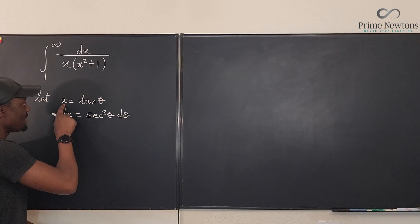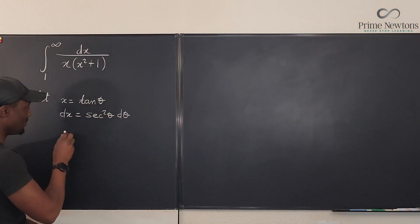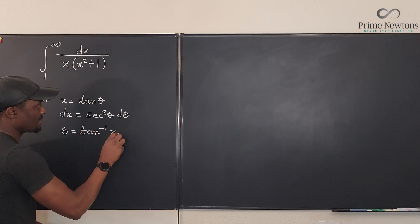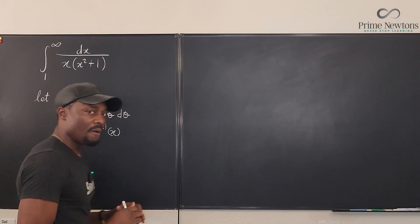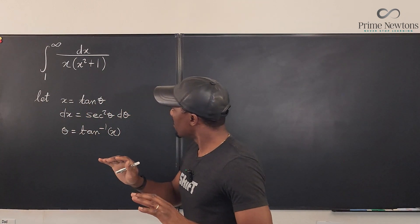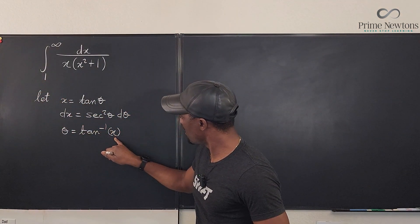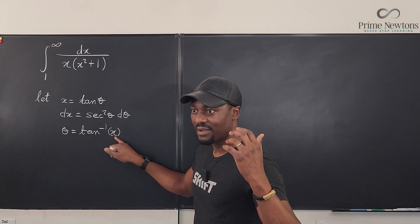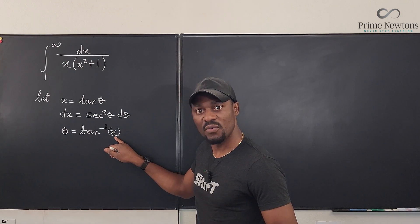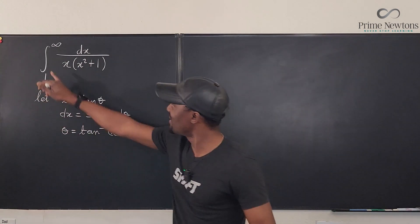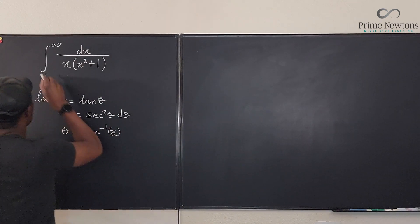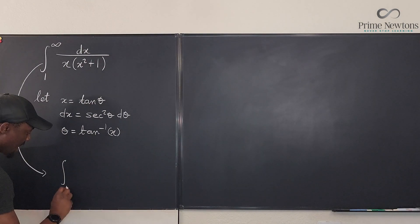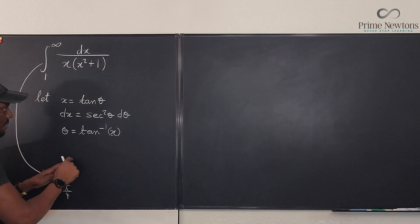Now we have these boundaries, and this has created a problem. Let's just clean everything up. If x is tan θ, it simply means that θ is arctan of x. Now, we need to evaluate this. If we put one here, arctan of one is going to be π over four. So when we rewrite this integral, we're going to have the integral from π over four.